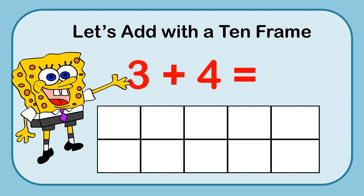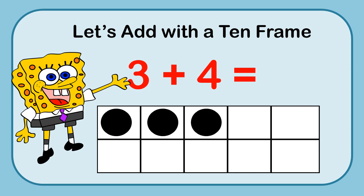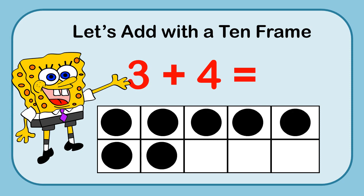Let's look at 3 plus 4. Put my 3 markers in there and 4 more: 1, 2, 3, 4. I know that I have 5 on that top row, so 5, counting up: 6, 7. So I know my answer — 3 plus 4 is 7.